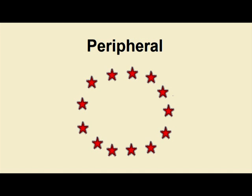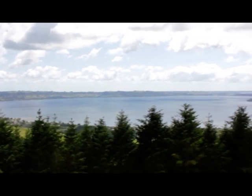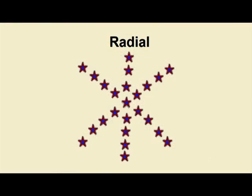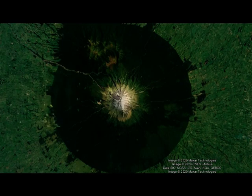A peripheral pattern is one where phenomena are arranged around the edges of a feature such as a lake. This is typical of tourist towns that develop around a lake, or settlements on Pacific islands that have a mountainous interior. Radial patterns are where phenomena spread from a central point — for example, Mount Taranaki in New Zealand has a pattern of streams that radiate from its centre.